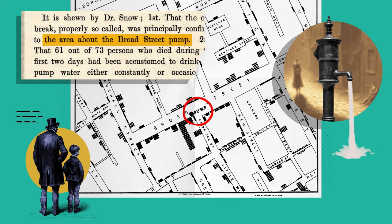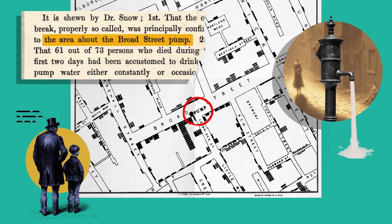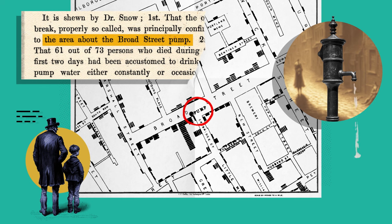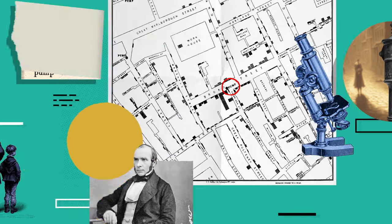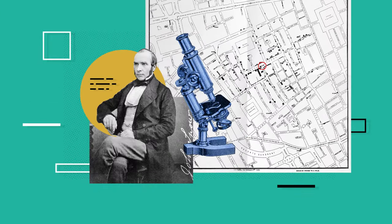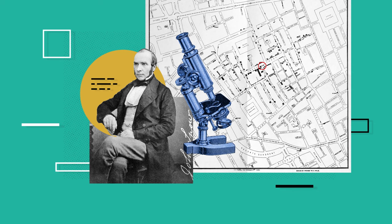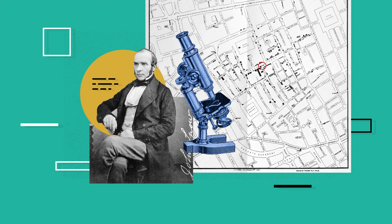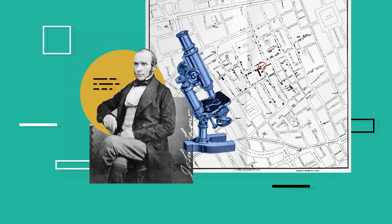All the deaths from cholera were clustered around a water pump on Broad Street. When he presented his findings to local officials, the pump was shut down and the outbreak ended. Dr. John Snow fundamentally changed our understanding of microbes, and his simple dot maps were a huge part of that.